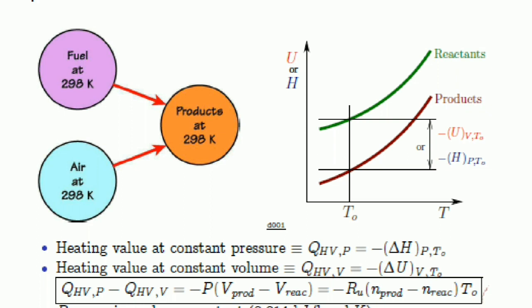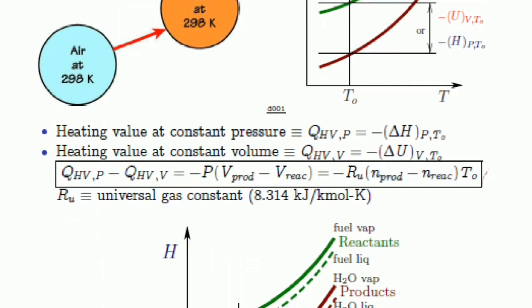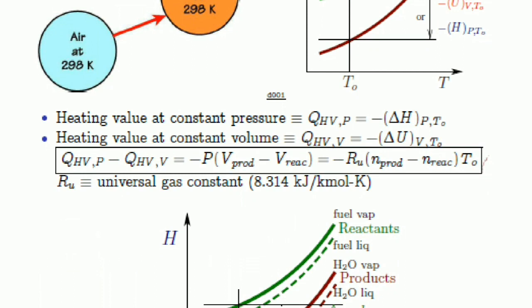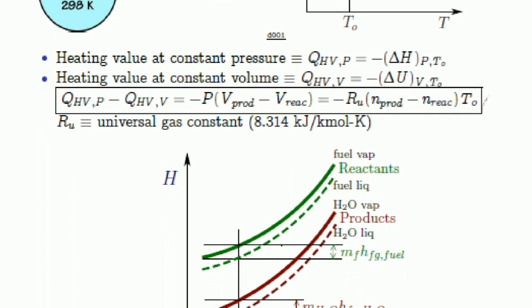Heating value at constant pressure can be written as QHV,P = -ΔHP·T₀, and heating value at constant volume is QHV,V = -ΔUV·T₀. Here, Ru is the universal gas constant, which equals 8.14 kilojoules per kilomole Kelvin.